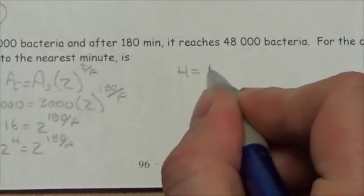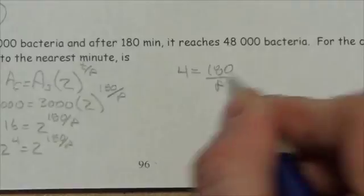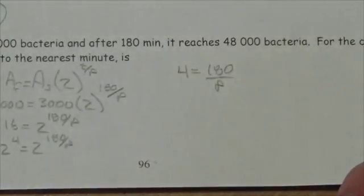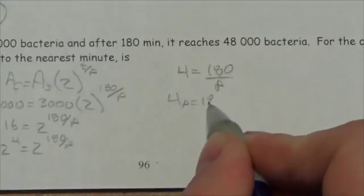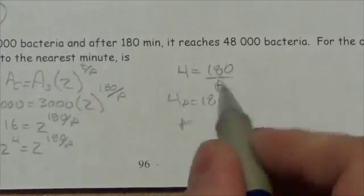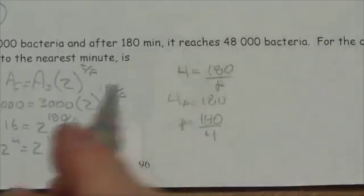So 4 equals 180 over p. This means 4p equals 180, and therefore p equals 180 divided by 4.